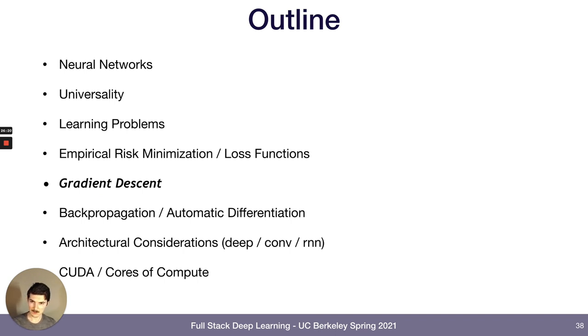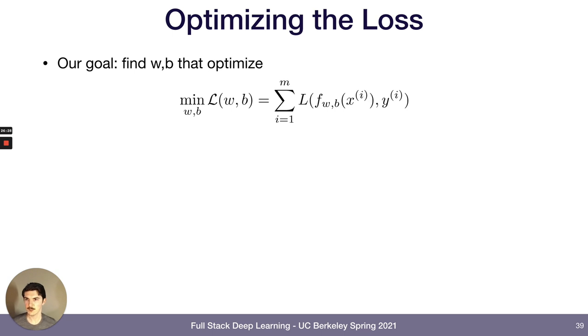Okay, so we have the loss function. So we can kind of see like, all right, if we have some weights, we can understand how good or bad the model is. But what do we actually do with that? Right? Well, our goal is to find the weights and biases that optimize this function, as in minimize the loss.